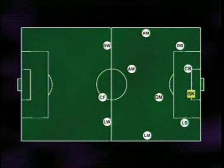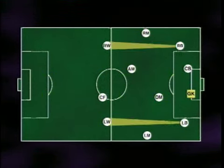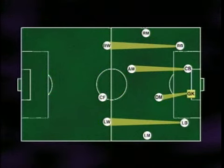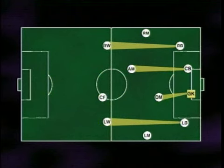If you look at this attacking shape, you're going to see all kinds of passing channels. You'll see direct passing channels from the outside defenders to the outside front runners. You'll see passing channels from the center back to the attacking midfielder. You can even see a kind of passing channel between the goalkeeper, if she's on one side of the goal, and the defensive midfielder.